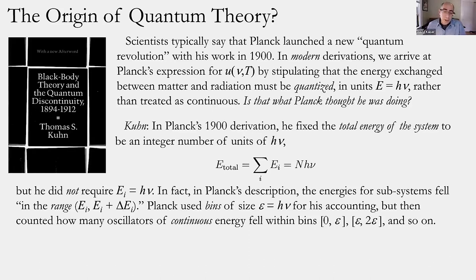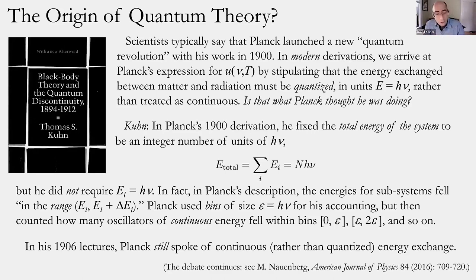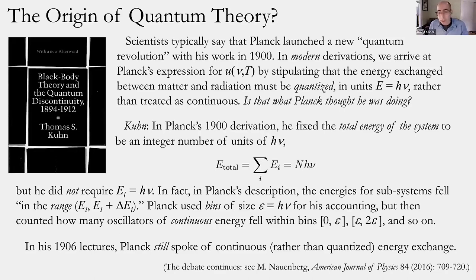According to Kuhn's analysis, Planck used bins of size hν (using the Greek letter epsilon) for his accounting — to say how many resonators had energies within zero and epsilon, or between one and two units — not that they had to have exactly one or two units as we would say today. Moreover, six years later Planck was still lecturing about a continuous rather than quantized energy exchange, suggesting this wasn't a momentary lapse in December 1900 but a sustained different interpretation of his own equation.